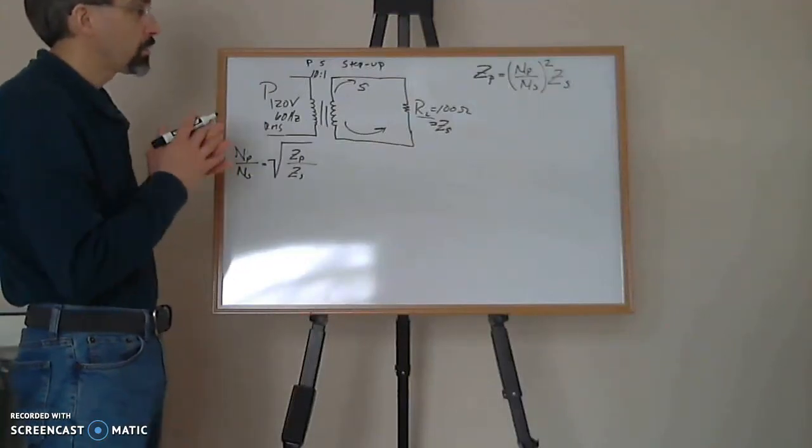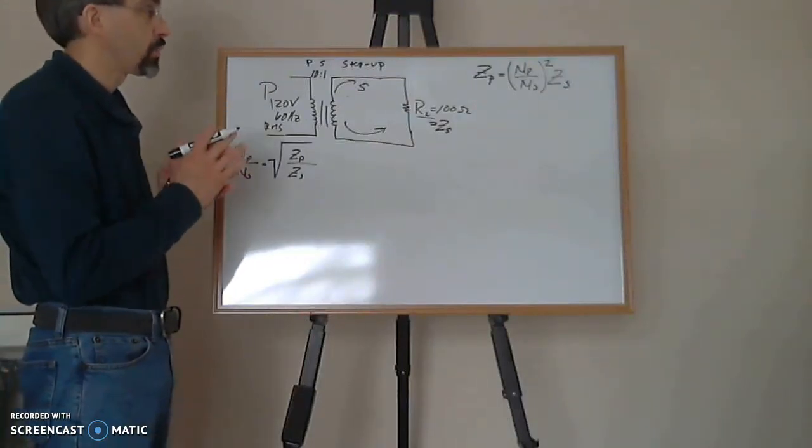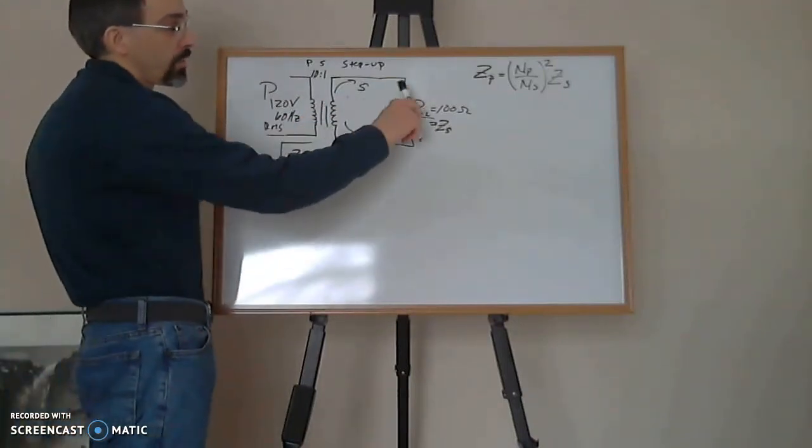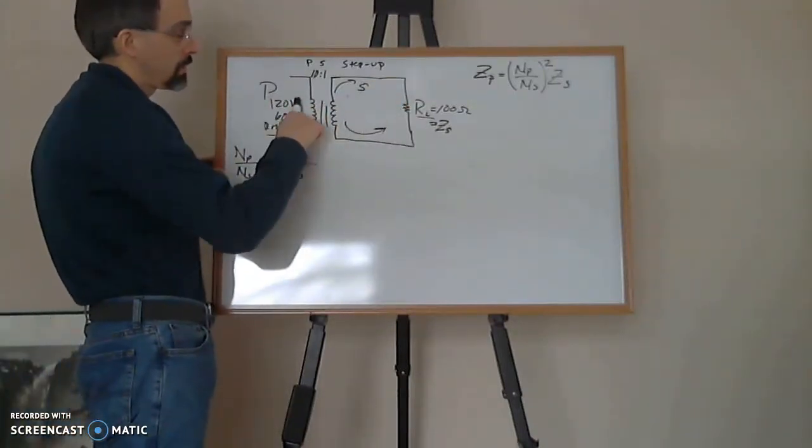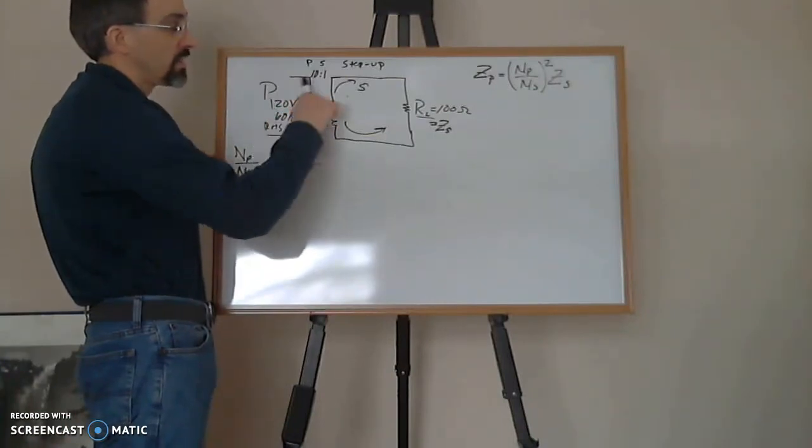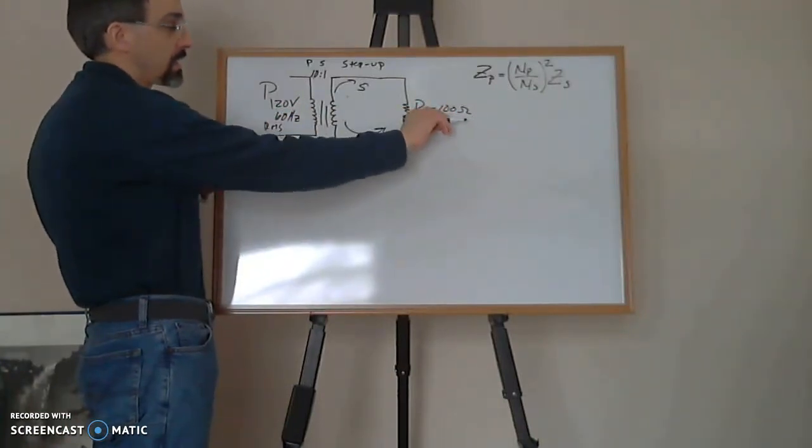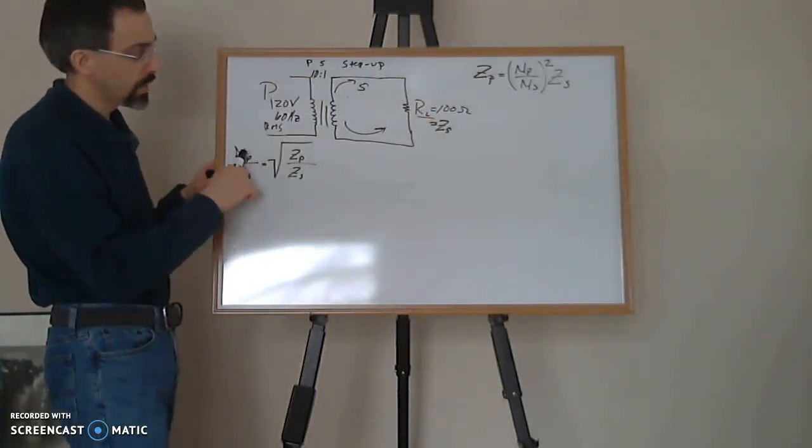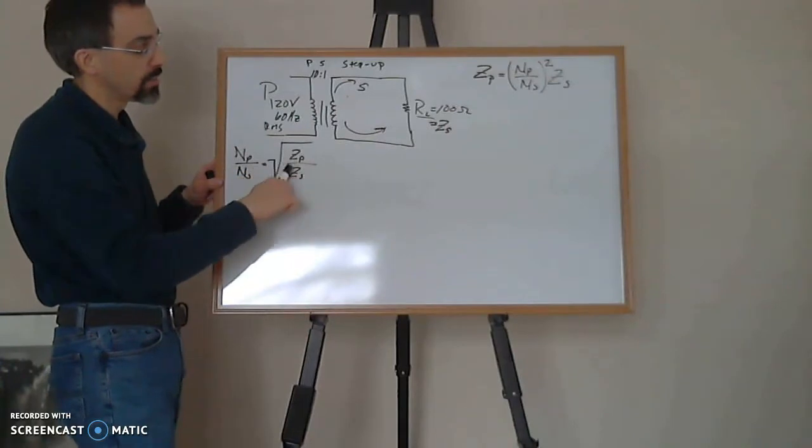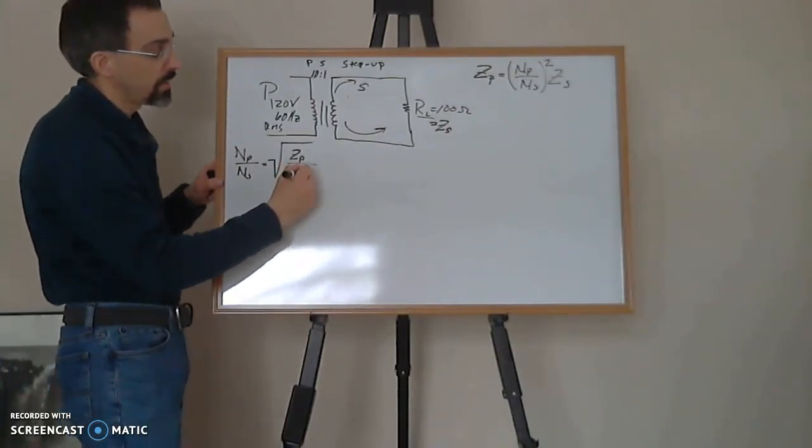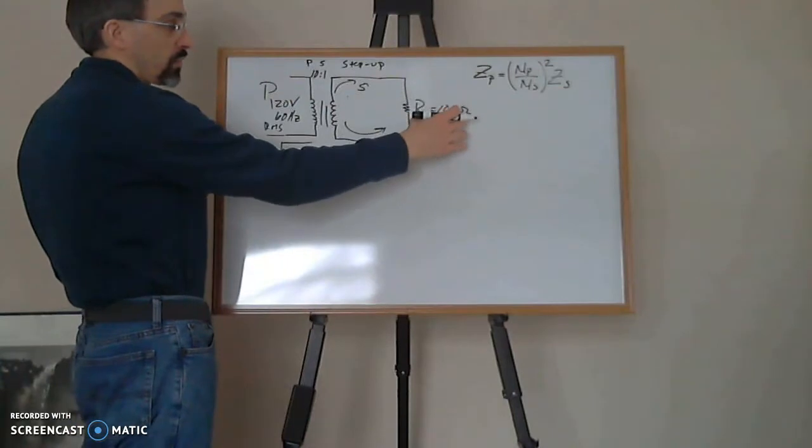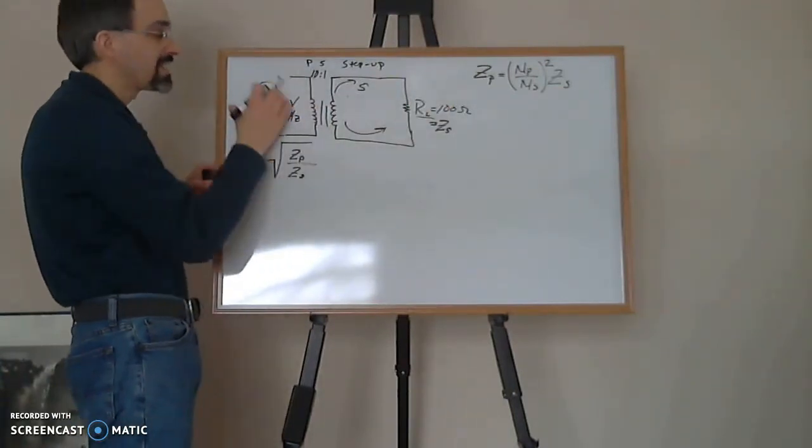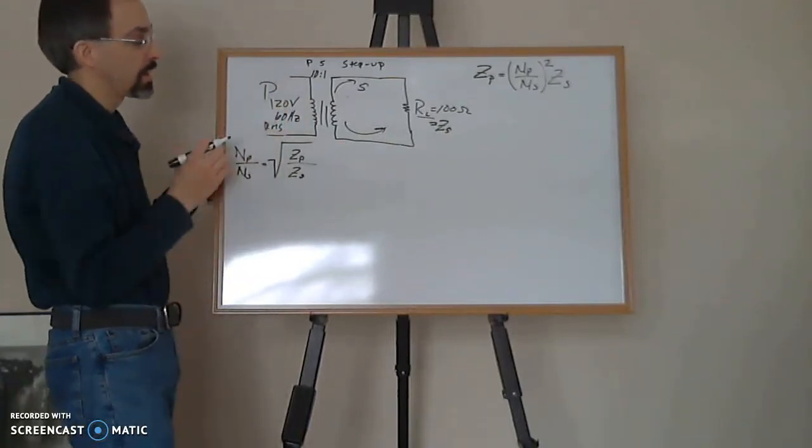Alright, so we want to look at what the impedance transformation is. Impedance transformation is how the primary sees the secondary. So basically your secondary is reflected back into the primary. We can use this equation: Np over Ns equals Zp over Zs. Basically what we're doing is this secondary part right here is being reflected back. What is this impedance on the primary side?